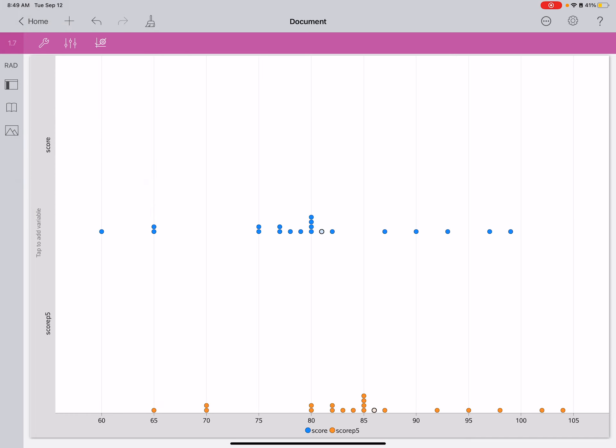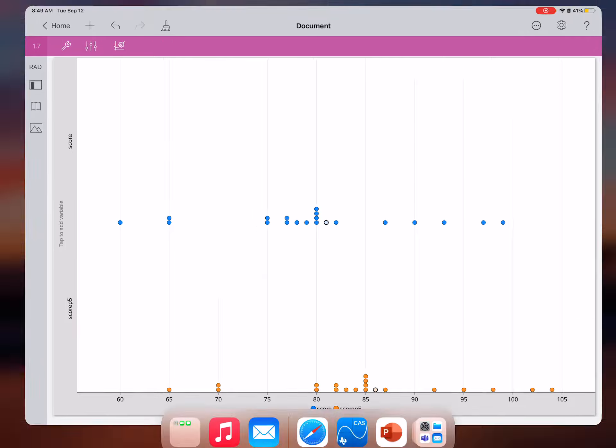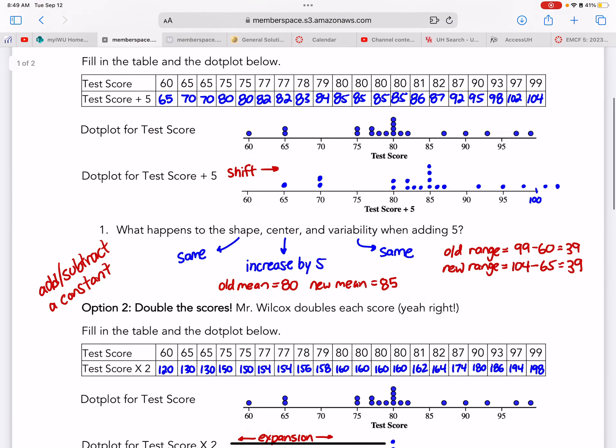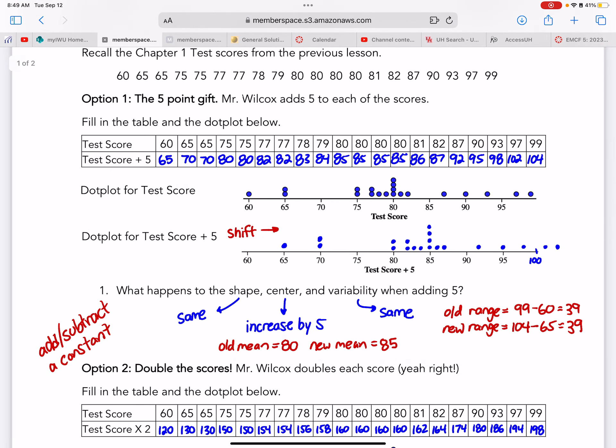I'm going to go back to my dot plot. You can hit menu, plot properties, add X variable, and then I'm going to choose score plus five. You can see that I'm going to graph them together. What happens to the shape? You can see the shape's the same. What happens to the center? The center was at 80, and it looks like it went to 85. What happens to the variability? The variability was the largest minus the smallest, so it was 99 minus 60, 39. And now it's 104 minus 65, still 39.